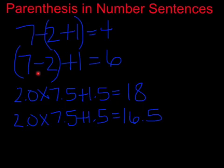Since 7 minus 2 is in the parentheses, that has to happen first. 7 minus 2 is 5, and 5 plus 1 is 6, which shows you that this number sentence is now true with the parentheses added.